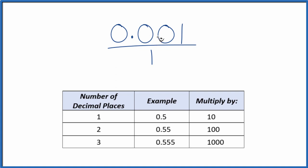What we'd like to do is get this 0.001 to be a whole number, and I can see we have 1, 2, 3 decimal places. Three decimal places we're going to multiply by a thousand, and that'll give us our whole number.